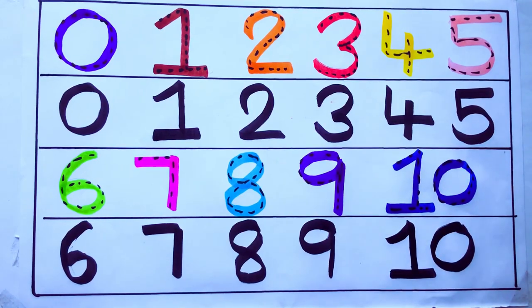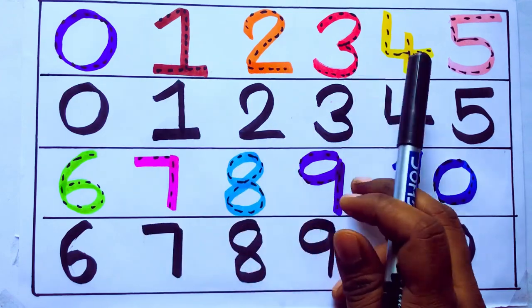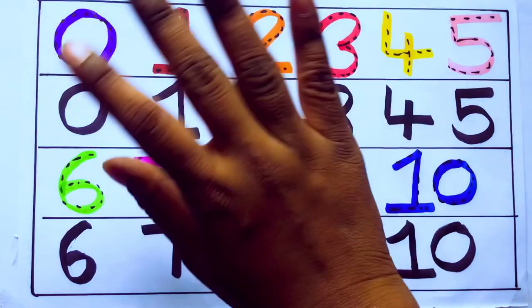Let's second learning numbers. 0, 1, 2, 3, 4, 5, 6, 7, 8, 9, 10. Okay. Bye kids.